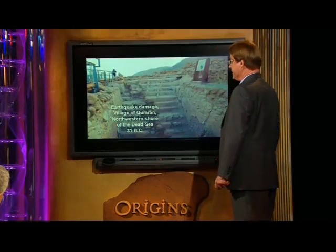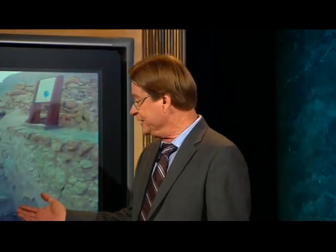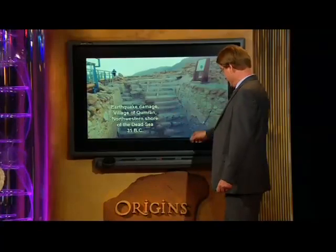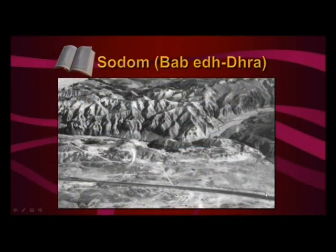The architecture at Qumran, which is the village where the Dead Sea Scrolls were buried, shows a ritual pool with the offset along a fault running right through the stair steps to the ritual bath. So the earthquake of 31 B.C. is well displayed, especially on the western side of the Dead Sea, like at Qumran.